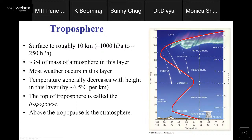The boundary between the troposphere and the next sphere is known as the tropopause, coming around 10 kilometers. This boundary also varies with region — over the tropical region, there is more heating and more convection, so the tropopause height will be more over tropical regions compared to polar regions, where the tropopause height is less.